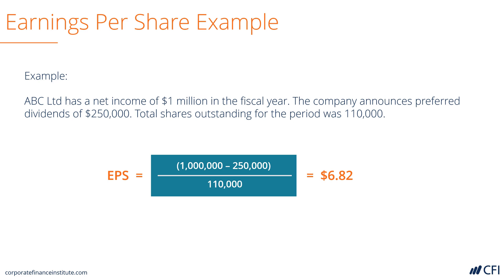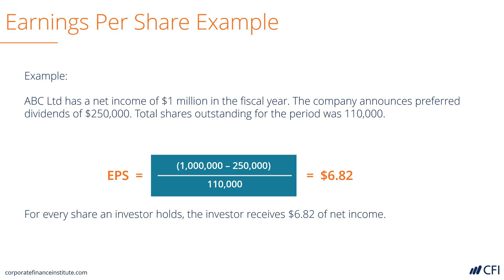If the company traded at a 10 times price-to-earnings ratio, its share price would be $68.20. For every single share that an investor owns, they would receive $6.82 of net income.